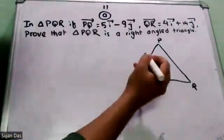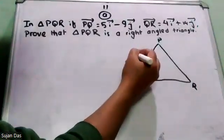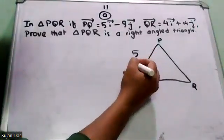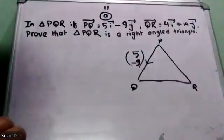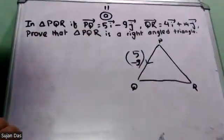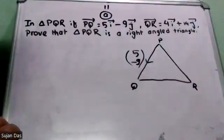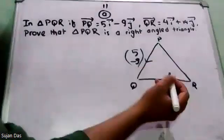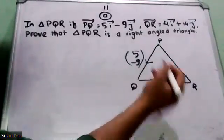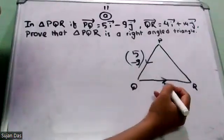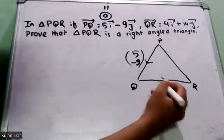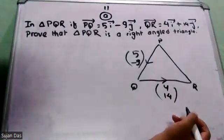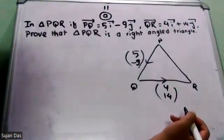Then I am going to put in formal x — you are going to call this 5, not the total of minus 9. Similarly, QR: you are going to call this 4, not the total of 14. So 4i plus 14j.